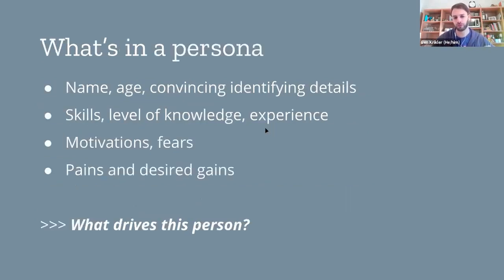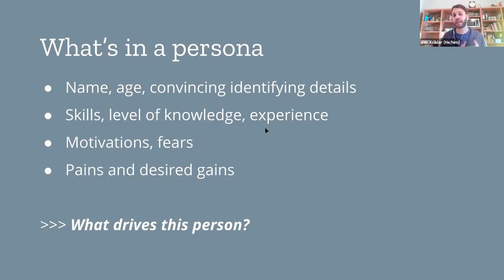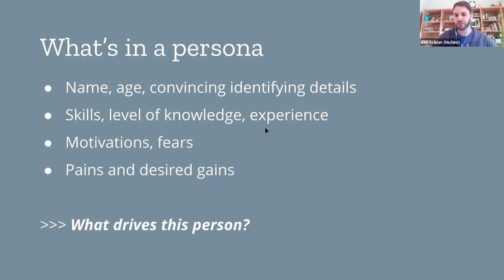Within a persona you would typically put a few very specific details. Give them a name — it makes it much more concrete — but don't use your own name or a friend's name. Give them an age, give them some convincing details like where do they live, how do they travel, what are their hobbies. Think about their skills, their level of knowledge, and their education, so you can really understand where they'll be coming from.